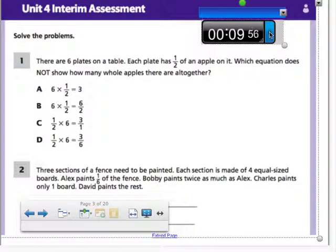Solve the problems. There are six plates on a table. Alright, right away I'm underlining six because I know it's going to be important. Each plate has half of an apple on it. Alright, right away I'm going to underline half. That's probably important too.